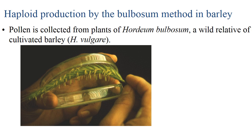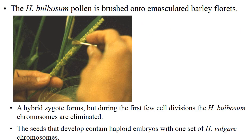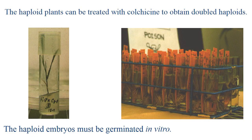The bulbosum technique: haploid production by the bulbosum method. Here pollen is collected from plants of Hordeum bulbosum, a wild relative of cultivated barley (Hordeum vulgare). The bulbosum pollen is brushed onto emasculated barley florets. A hybrid zygote forms, but during the first few cell divisions, Hordeum bulbosum chromosomes are eliminated. The seeds that develop contain a haploid embryo with one set of Hordeum vulgare chromosomes.